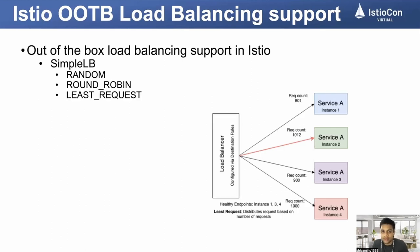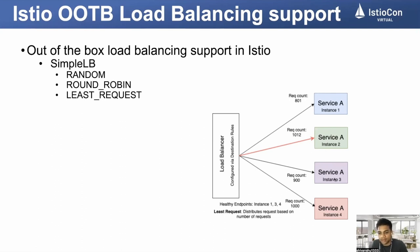I can also configure least request. For example, if at a given time service A instance one has served 801 requests, instance two served 1012 requests and then went unhealthy, and instance three has served 900 requests, I want traffic to go to the service which has served the least requests so far. I can do that by configuring least request in simple LB in Istio.